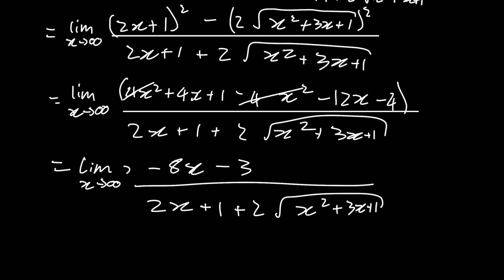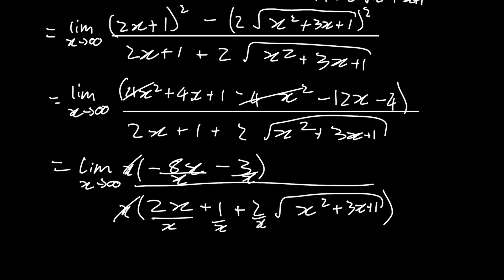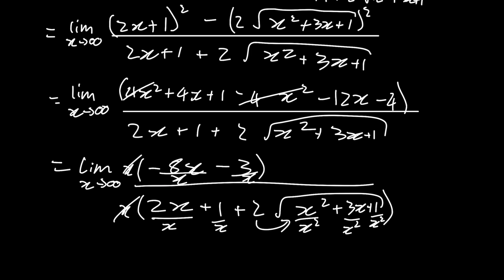Now I'm going to take out x as a common factor in both the numerator and the denominator. In the numerator: negative 8x over x minus 3 over x — those x's cancel. In the denominator: 2x over x plus 1 over x, plus 2 over x into the square root. Distributing x to the negative 1 into the square root means we're distributing x squared inside it — that is, dividing everything inside by x squared. If you take out 1 over x squared as a common factor within the square root and then bring it out, you're left with 1 over x outside.